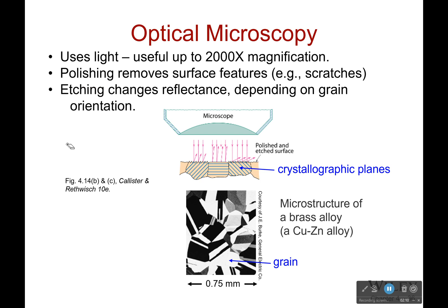Now, one issue is that if you have a polished surface, it's going to remove surface features like scratches and other things. However, it's not going to get rid of the grain boundaries. If you have an etched surface, it's going to change reflectance depending on the grain orientation, which is what actually happened right here. You can see all these different grains based on the different colors, because they have a different orientation of their particular planes.